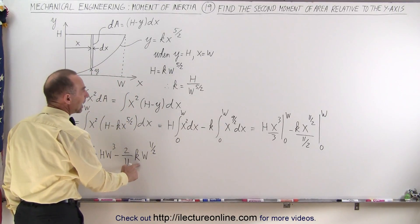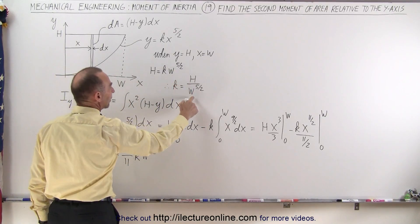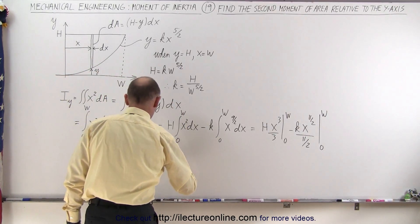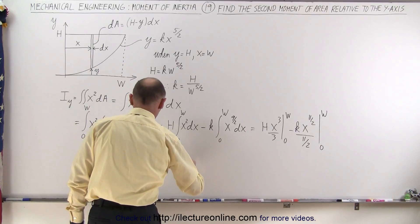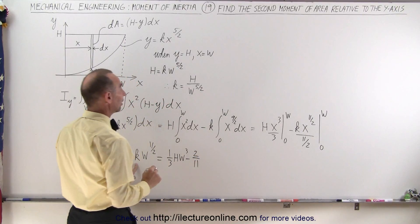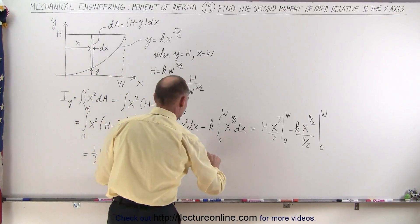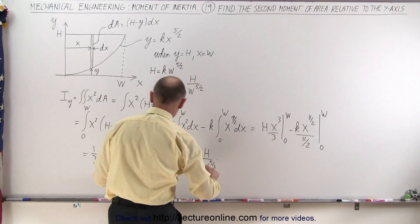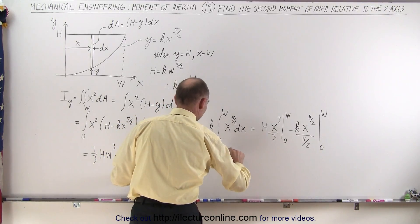Now we realize that k is the same as h divided by w to the 5 halves power, so let's make that substitution. So this becomes 1 third hw cubed minus 2 11ths. Instead of k, we're going to write h divided by w to the 5 halves, times w to the 11 halves.